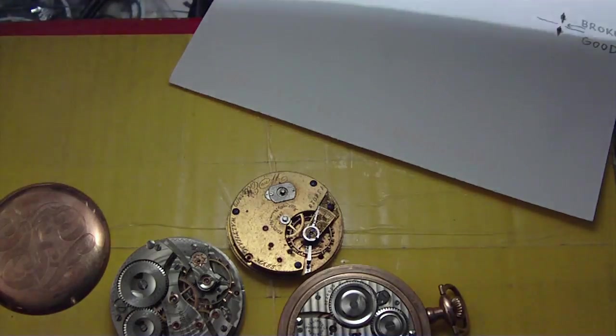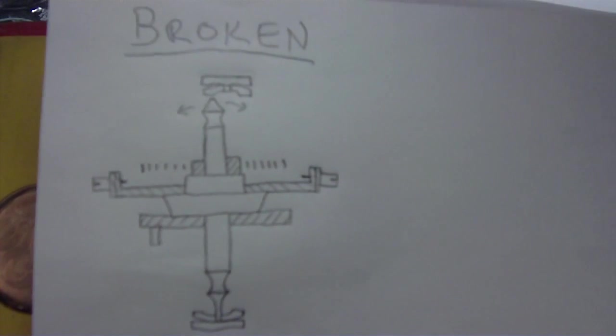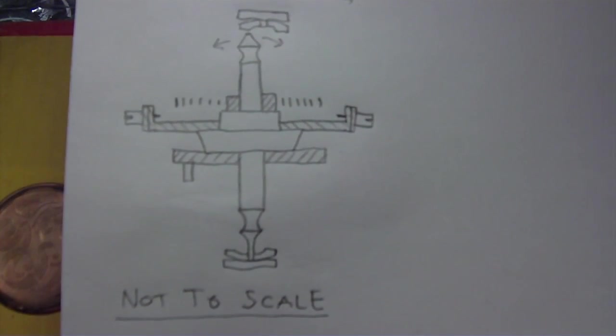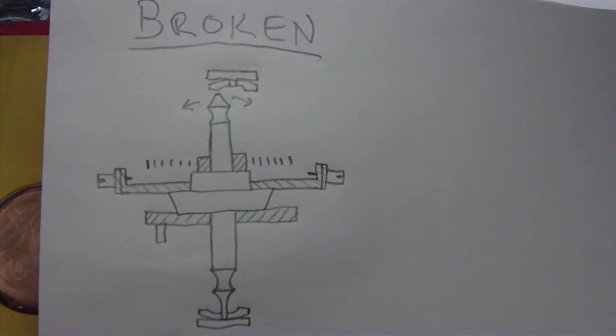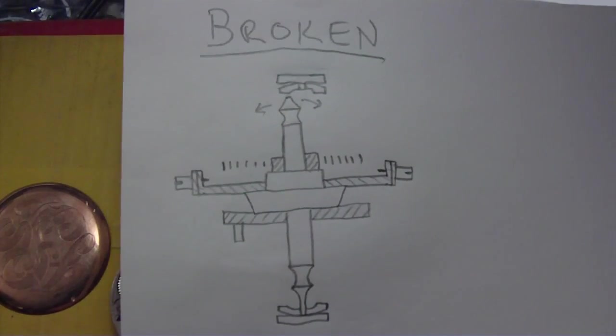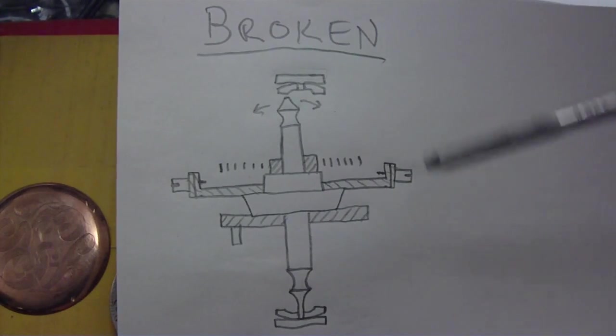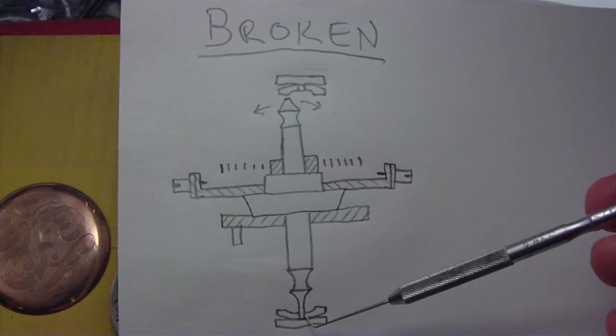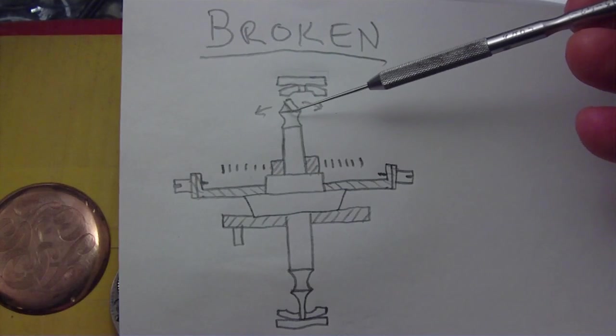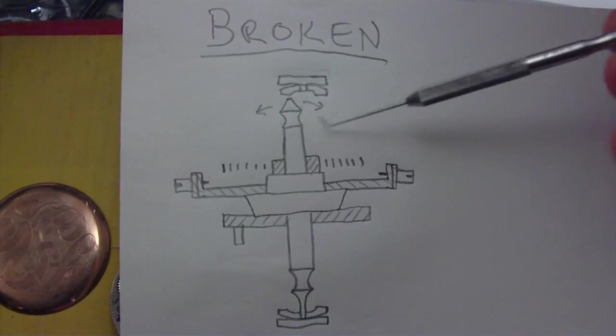The next picture is a broken one. Notice these are not to scale. This is a broken balance staff. As you can see, this side - well, I chose this end to be broken, but this one's engaged. This side, you see, it's broken off. There's no little tip, so the end is free to move about.